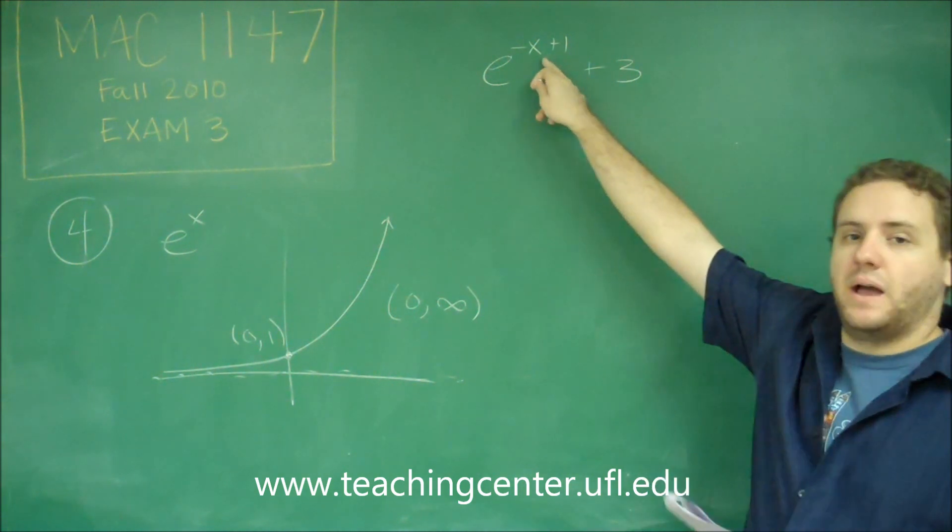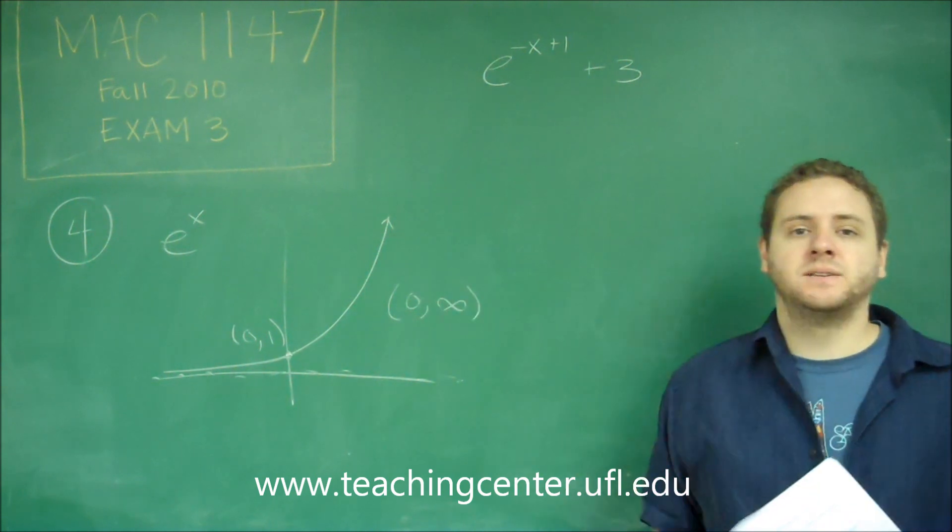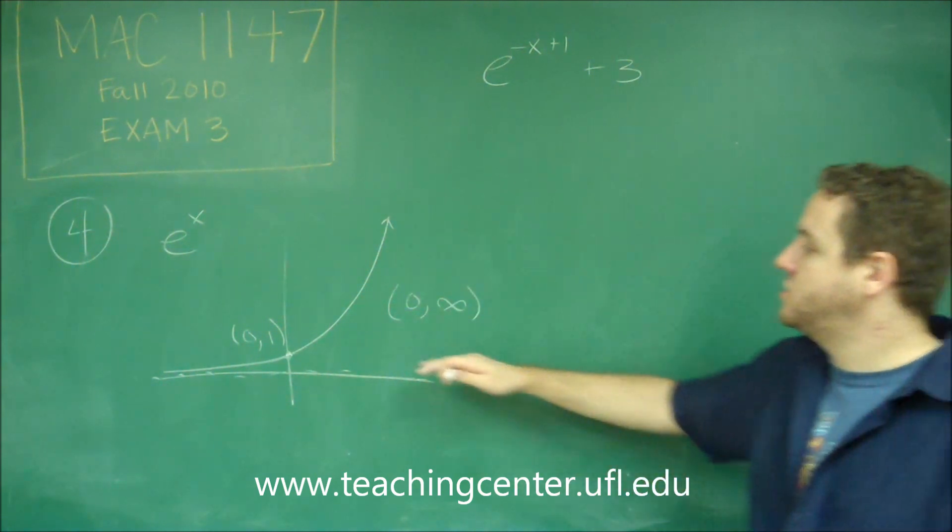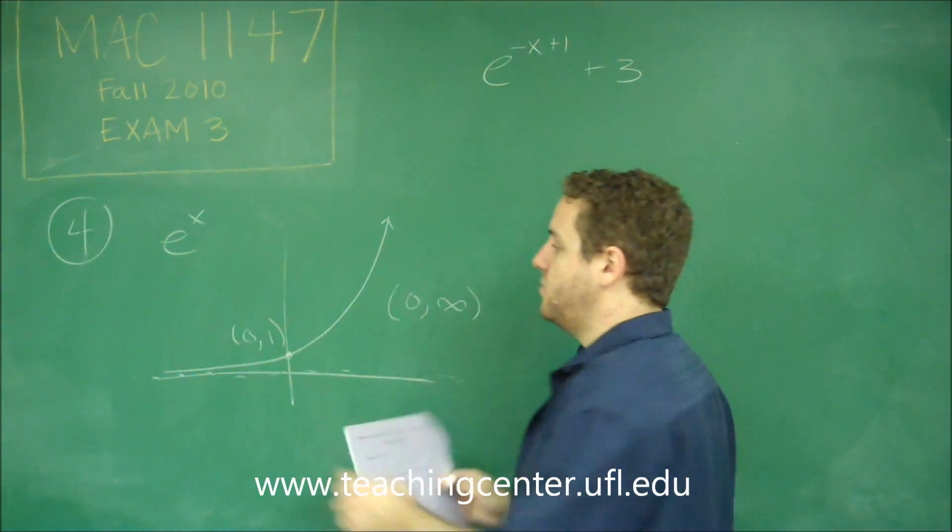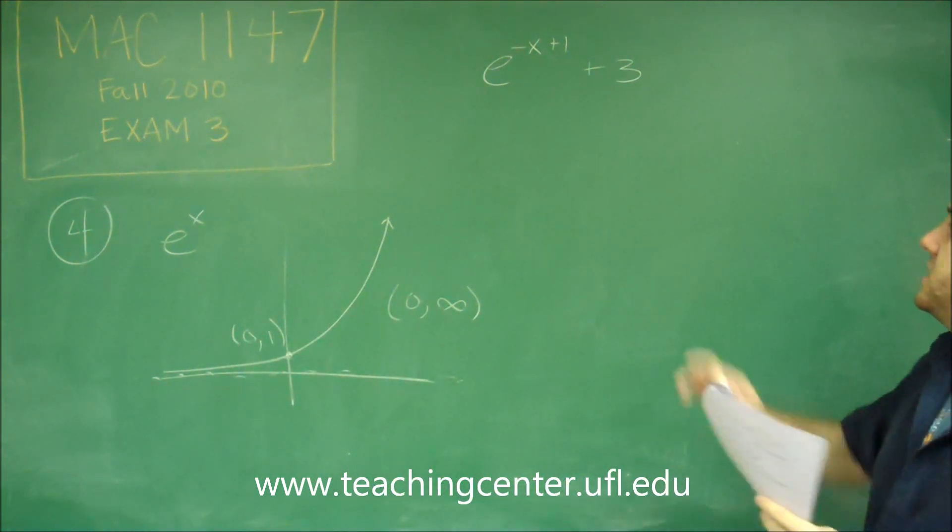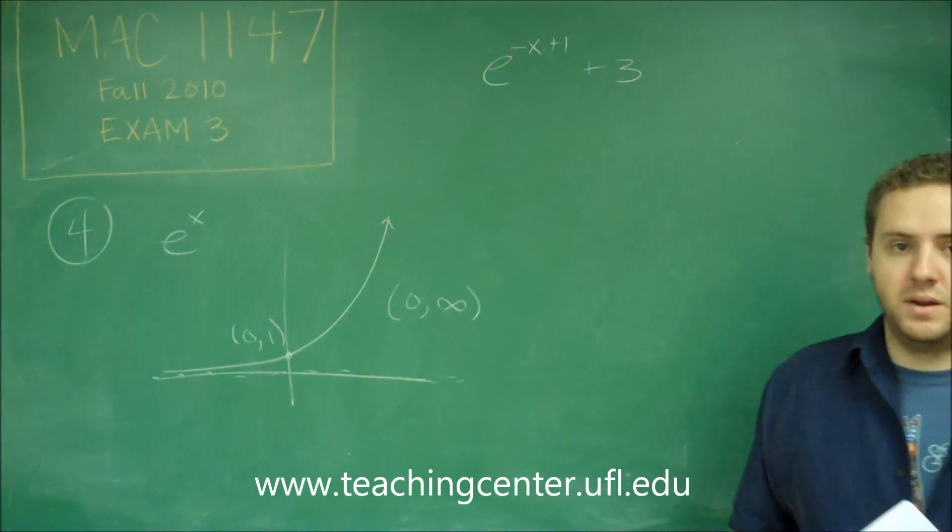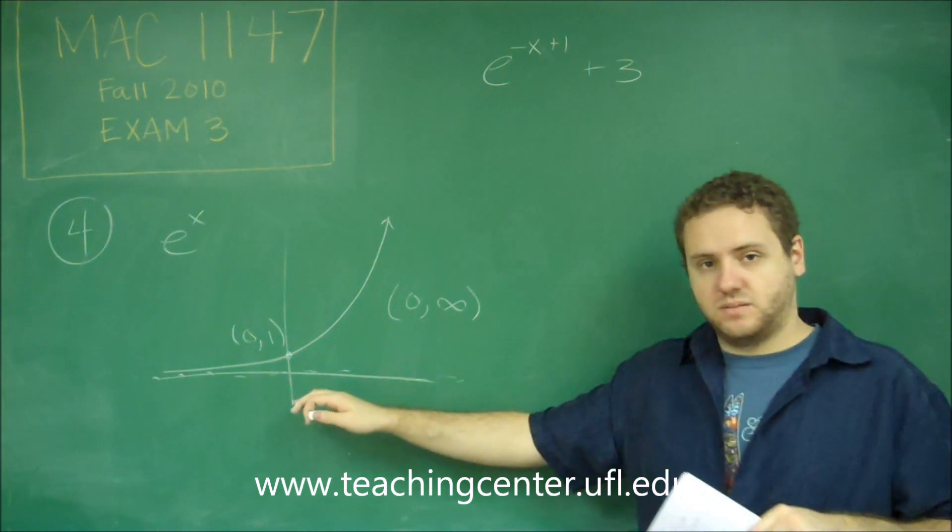So the range is the possible y values. Anything that goes on in the power here—we have a horizontal reflection, we have a shift left—none of those are going to change what the y values can be. If you flip this or shifted it left and right, that doesn't change the range at all.